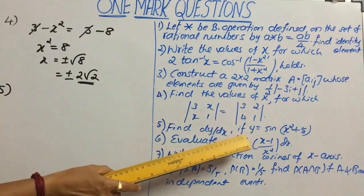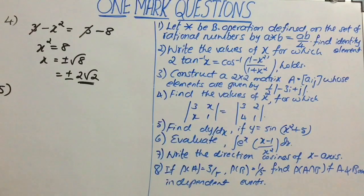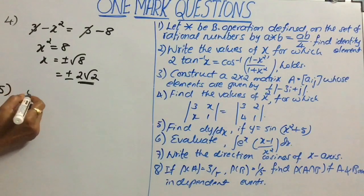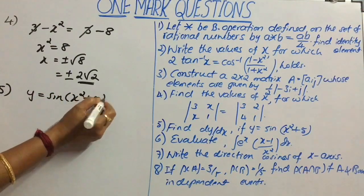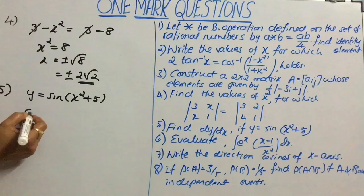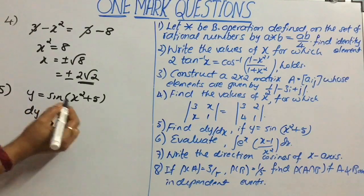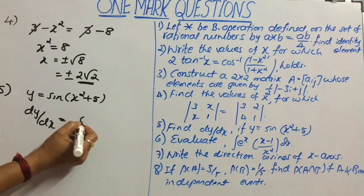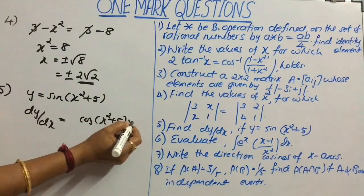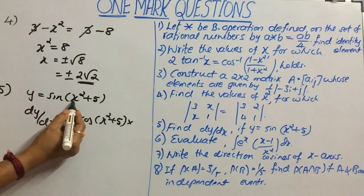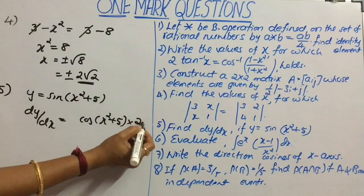Question 5: find dy by dx if y equals sin of x squared plus 5. Consider y equal to sin of x squared plus 5. Differentiating, dy by dx equals cos of x squared plus 5, and then using the chain rule, the derivative of x squared plus 5 gives 2x.